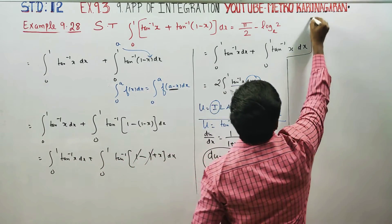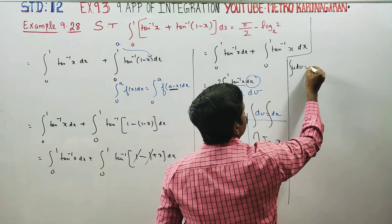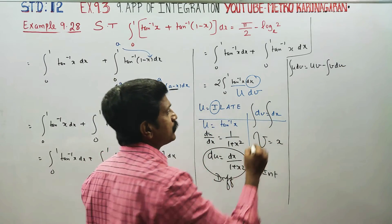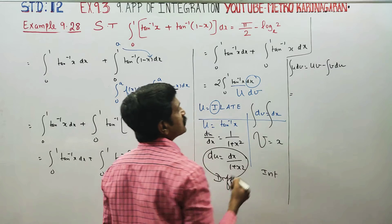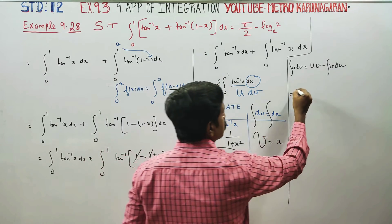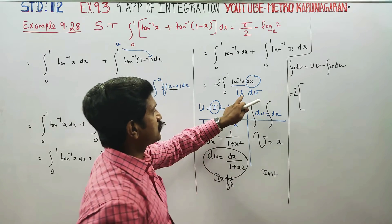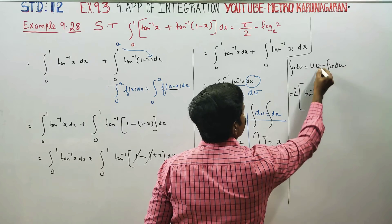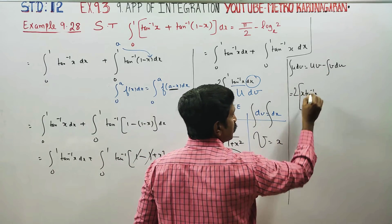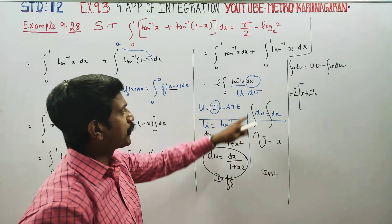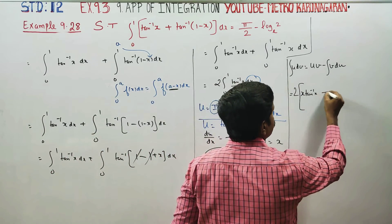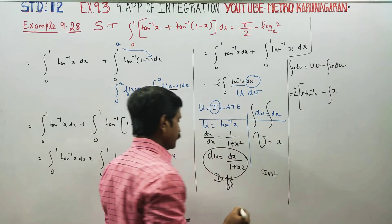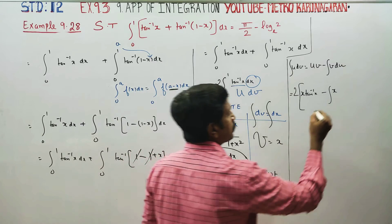The formula for integration of u dv is: u times v minus integration of v du. So, what is my u? u is tan inverse of x. What is v? v is x. Then minus integration of v du: v is x, and du is dx/(1 + x²). With limits 0 to 1, this gives us 2 times x tan inverse of x, minus the integration of x/(1 + x²) dx.